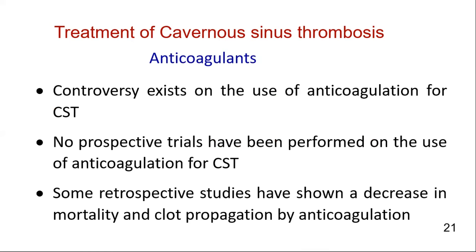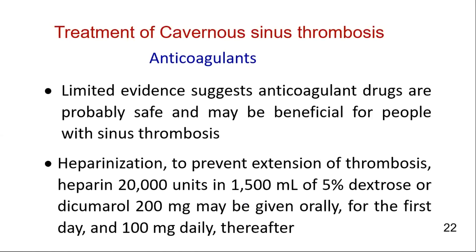Controversy exists regarding the use of anticoagulation for cavernous sinus thrombosis. No prospective trials have been performed due to the rarity of this syndrome. However, some retrospective studies have shown a decrease in mortality and clot propagation with anticoagulation. Limited evidence suggests that anticoagulant drugs are probably safe and may be beneficial. Therefore, anticoagulation with heparin should be considered, since the goal is to prevent further thrombosis and to reduce the incidence of septic emboli.